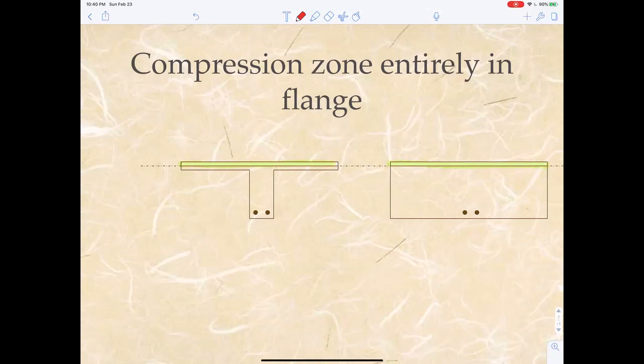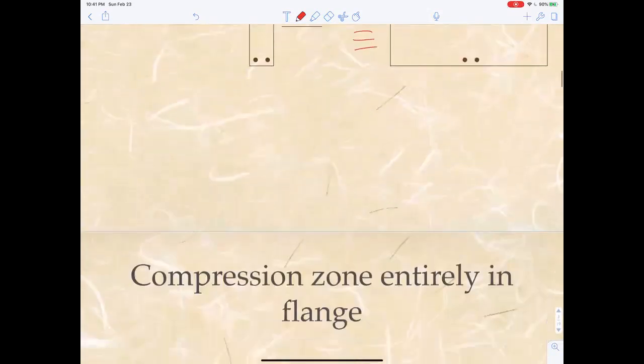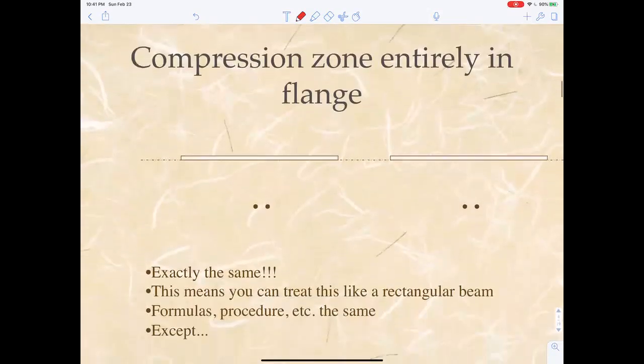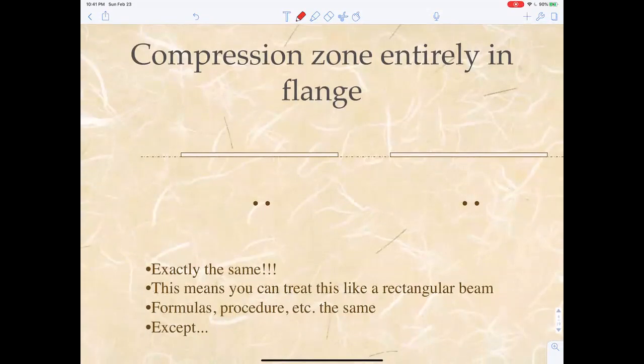It doesn't matter what that shape is - this could have been shaped like this for all we know. I mean, really, physically it would matter, but for our analyses, it wouldn't. So these two are identical in terms of analysis. So if the compression zone is entirely in the flange, can you see these are identical? They're exactly the same. This means everything you've learned in the previous videos on rectangular beams are all good - the formulas, the procedures, everything, the charts, everything - except there's one exception.